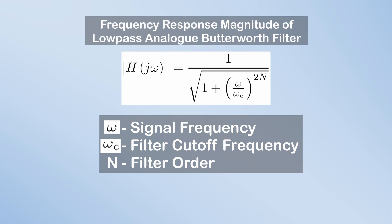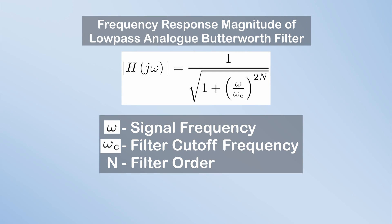The frequency response magnitude of the low pass Butterworth filter is 1 over the square root of 1 plus the ratio of the frequency divided by the cutoff frequency. The ratio is to the power of 2 times n, where n is the order of the filter.